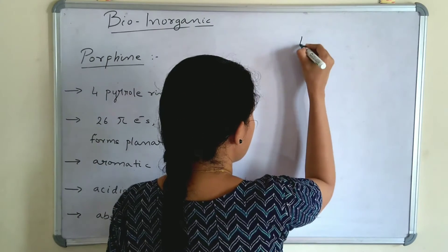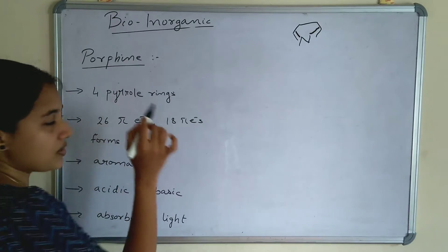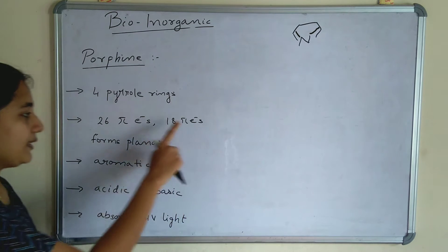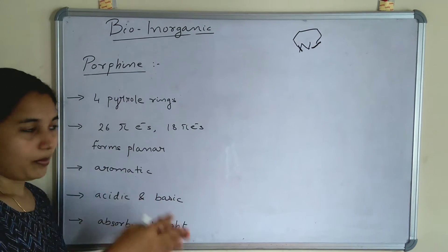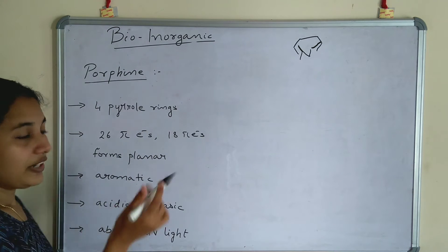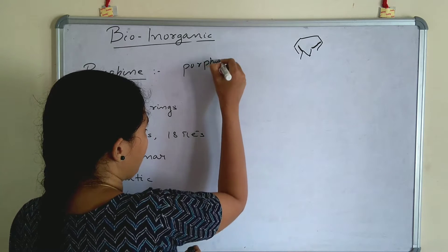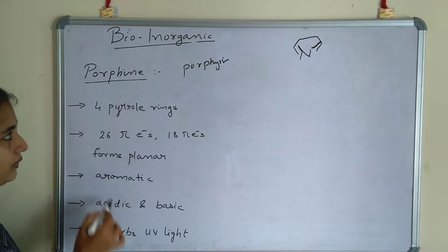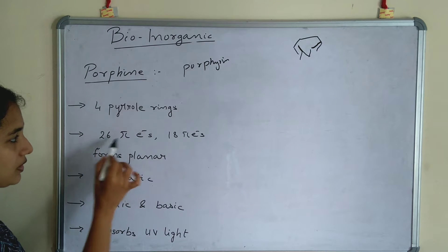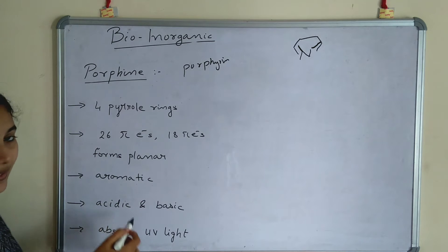So we know pyrrole rings — this is a pyrrole ring. Porphyrin constitutes four pyrrole rings with 26 pi electrons, of which 18 pi electrons form the planar aromatic system. Planarity is constituted by 18 pi electrons, and 26 pi electrons are present in porphyrin. When a metal is connected to porphine, it is called a porphyrin. Porphyrin is aromatic, constituted of 18 pi electrons.